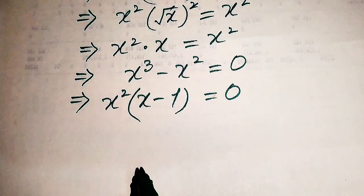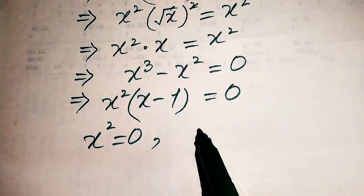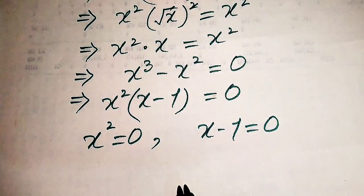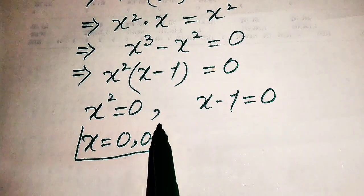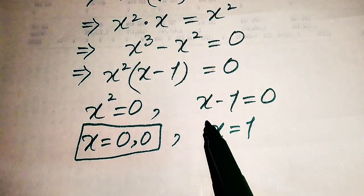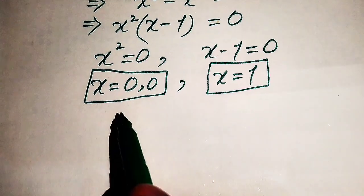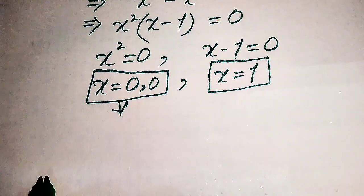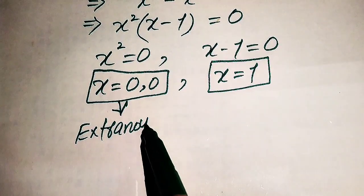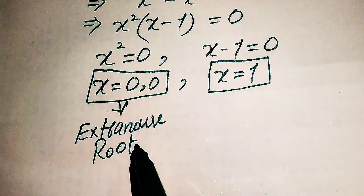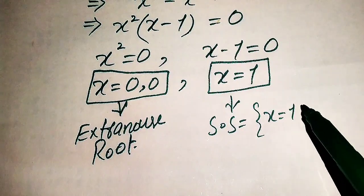Both terms involve x², so we take x² as a common factor, giving x²(x minus 1) equals 0. We split into two cases: x² equals 0, giving x equals 0 (two repeated roots), and x minus 1 equals 0, giving x equals 1 (distinct root). Since we already verified in the first method that x equals 0 is extraneous and x equals 1 satisfies the equation, the solution set is x equals 1.